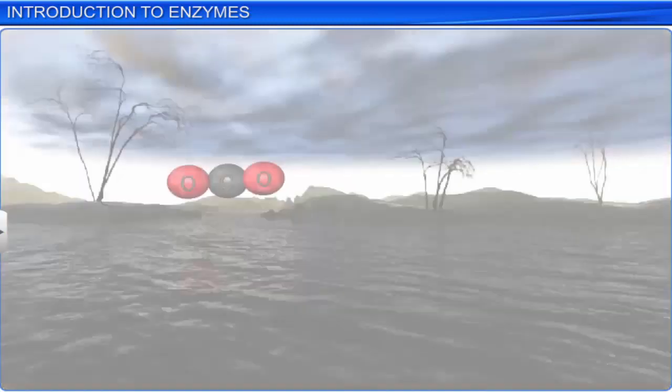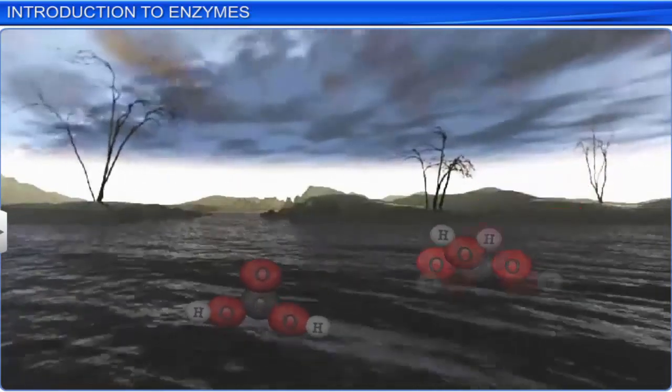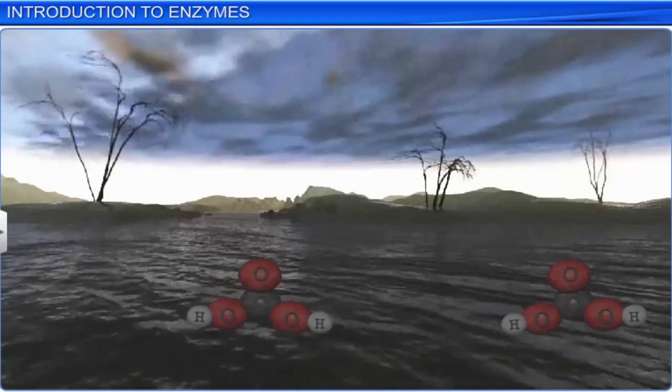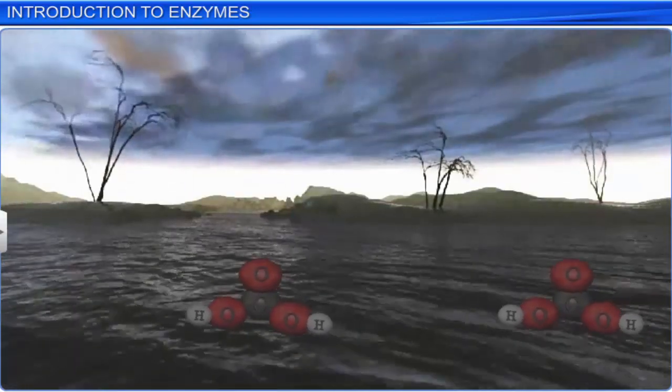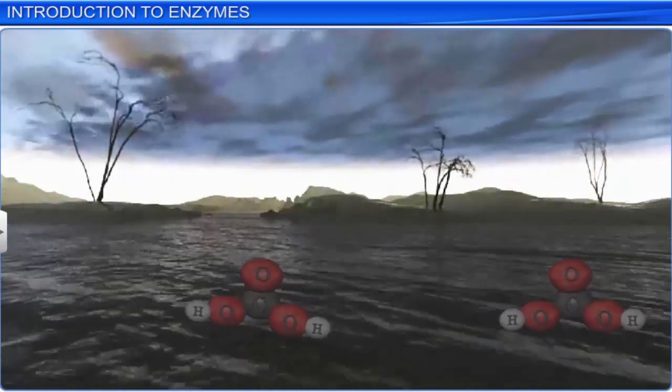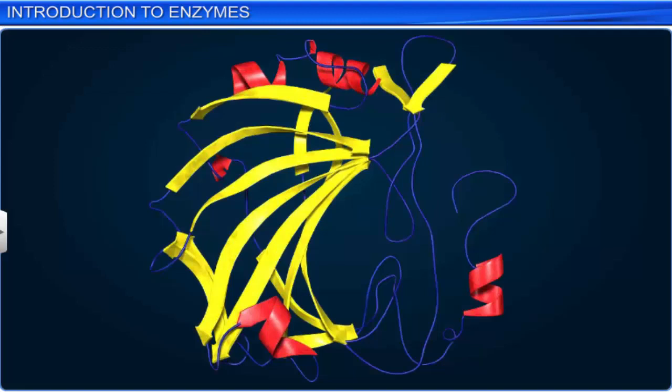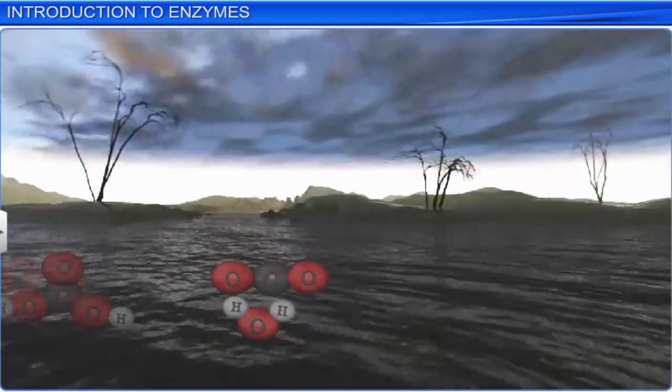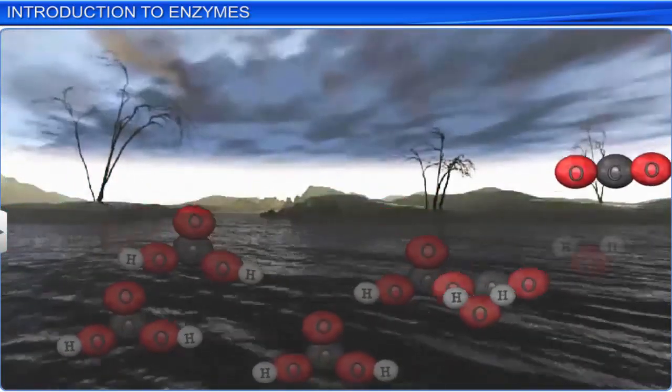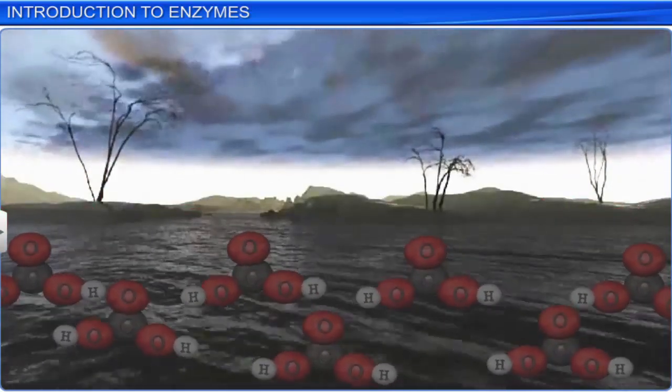Consider the example of a reaction where carbon dioxide and water react to form carbonic acid. In the absence of any enzyme, 200 molecules of carbonic acid are formed in an hour. However, when the enzyme carbonic anhydrase is used, 600,000 molecules of carbonic acid are formed every second. Hence, the carbonic anhydrase enzyme accelerates the reaction 10 million times.